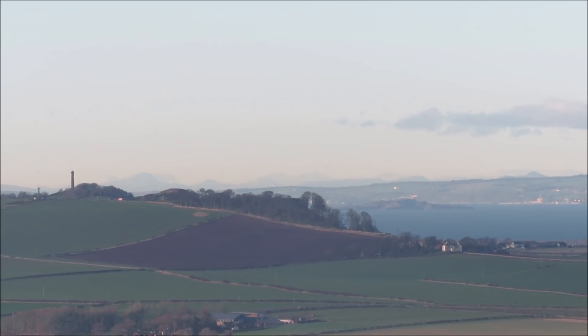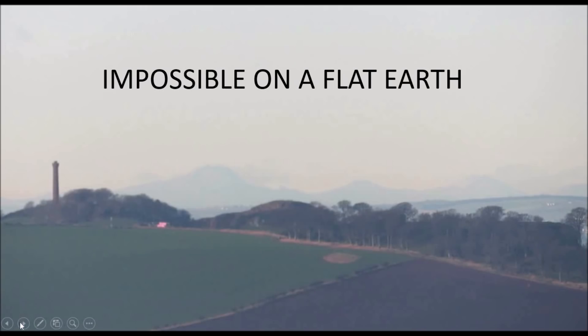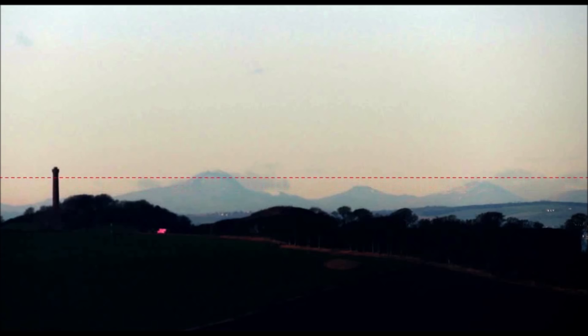That's the video from which the still shots for today's video are taken. What I've done is take the still frame and put it into GIMP 2 software and adjust the levels slightly to make the mountains in the distance appear a little bit more clearly. This picture — this observation — is impossible on a flat earth, because everything below the red dotted line across the screen must be lower than 210 metres above sea level if the earth is flat.